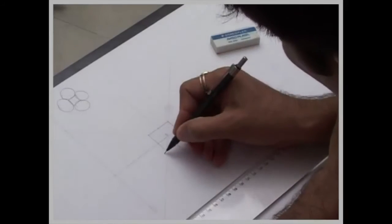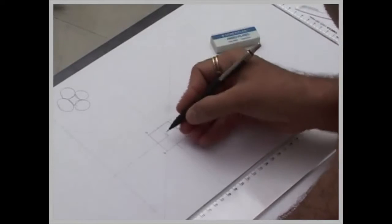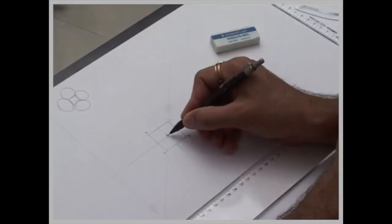Now what we used to do, we used to bisect the inside angle. Like this is O, this is A, this is B, this is C, this is D. So what we used to do, we used to bisect angle OAB.